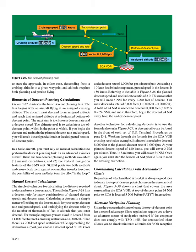Another technique for calculating descents is to use the formula shown in Figure 3-29. A descent table can be found in the front of each set of U.S. terminal procedures on page D-1. Working through the formula for the ESAVOR crossing restriction example: 8 minutes is needed to descend 8,000 feet at the planned descent rate of 1,000 FPM. At your planned descent speed of 180 knots, you will cover 3 nautical miles per minute. Thus, in 8 minutes, you will cover 24 nautical miles. Once again, you must start the descent 24 nautical miles prior to ESAVOR to meet the crossing restriction.